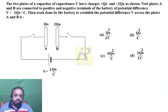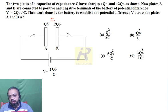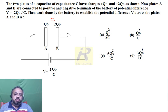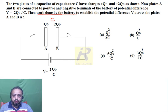We have to find the work done by the battery to establish the potential difference V across plates A and B.